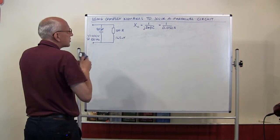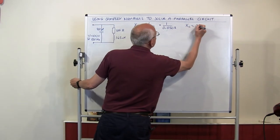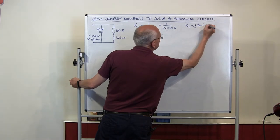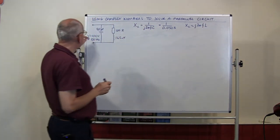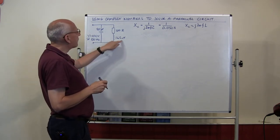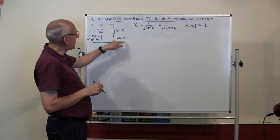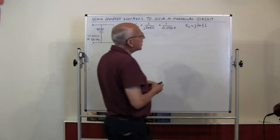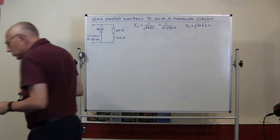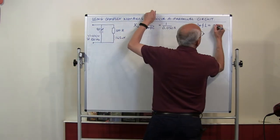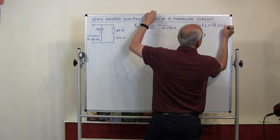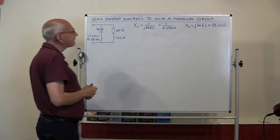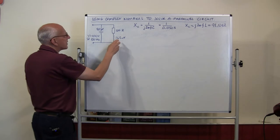For the inductor, XL equals j times 2πf times the inductance. The inductance is 145 millihenries (145 × 10⁻³). The answer to that is 91.1062 ohms. So that's the reactance of the inductor — the reactance of the capacitor branch is around 20 ohms, and this one is about 91 ohms — both related to phase angle changes.